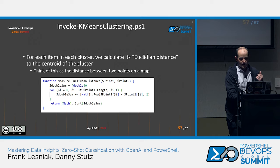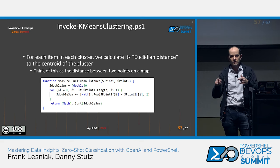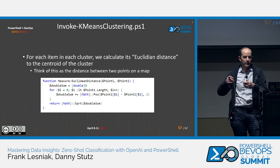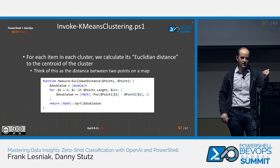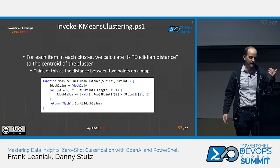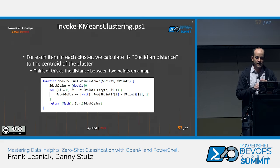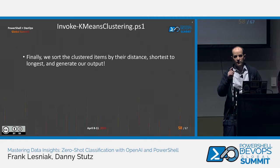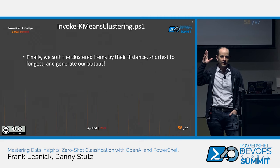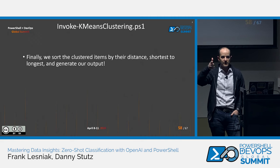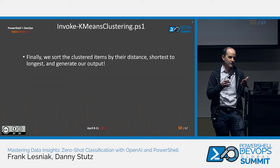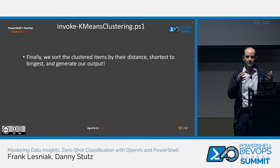The next thing we do after getting the centroid information and knowing which cluster each item is assigned to: we need to get the Euclidean distance. Without getting into too much detail, it's basically the distance between two points on a map. What we want to do is sort the clustered items — everything in cluster number one, for example — by distance to the centroid, so the closest items to the centroid are first, and we can use those as our most representative items.